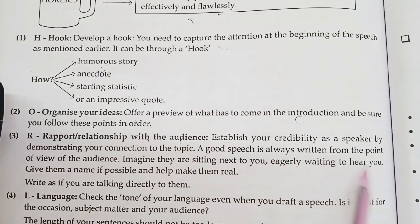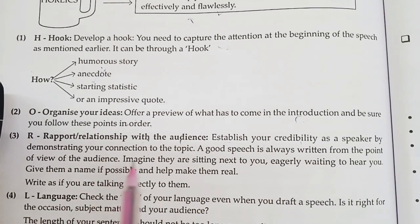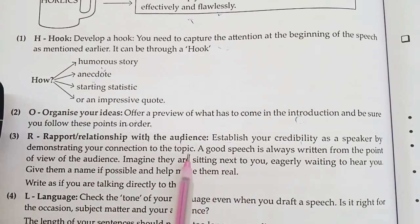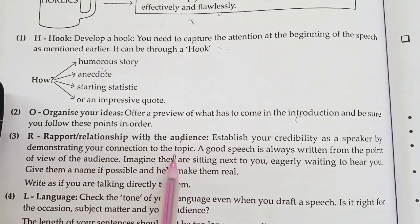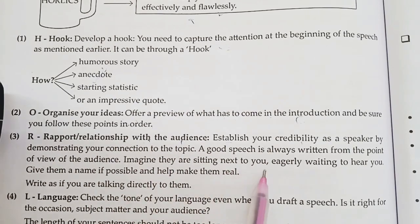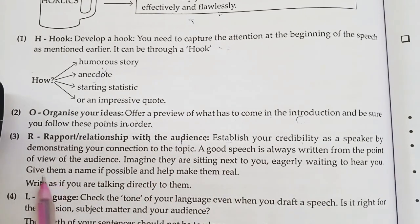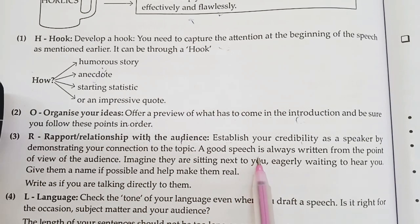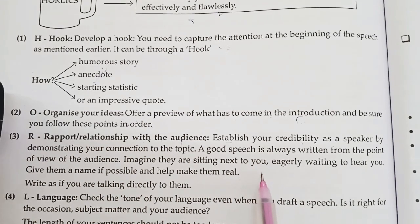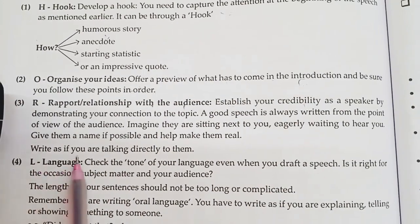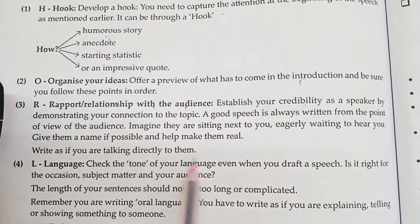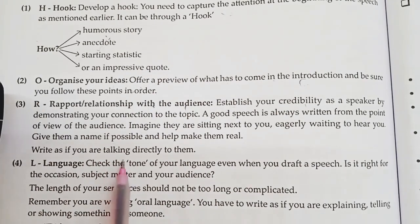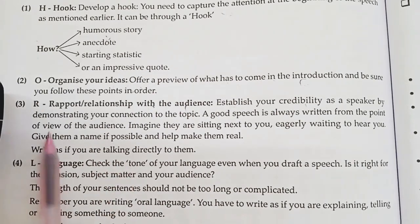Next is C — Consider the audience. A good speech is always written from the point of view of the audience. Imagine they are sitting next to you, eagerly waiting to hear your speech. Give them a name if possible and make them feel real. You have to write as if you are speaking directly to them.